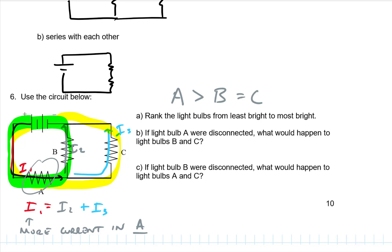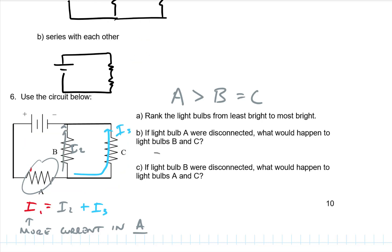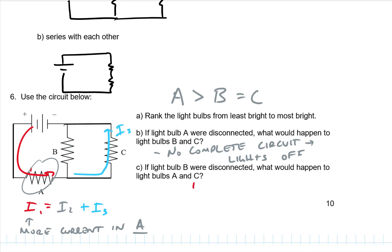If wire A were disconnected, that would eliminate current one completely, meaning there would no longer be any complete circuit and all the lights would be off. If light bulb B were disconnected, we would still have current one, but it wouldn't have to supply bulb B anymore — so A would get dimmer, and C would get brighter because it no longer has to share current with anything.